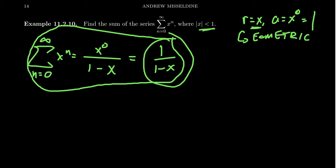And so what we can see, as long as the absolute value of x is strictly less than 1, it turns out that this function 1 over 1 minus x is actually equal to this power series.